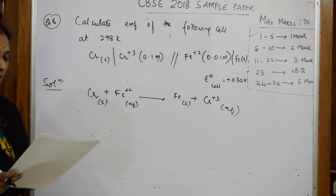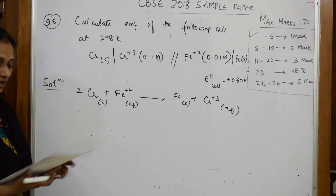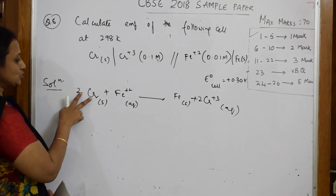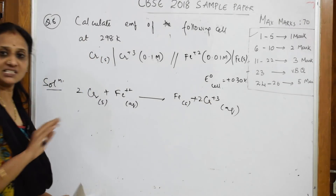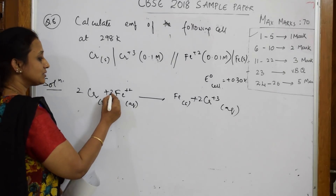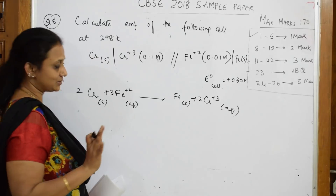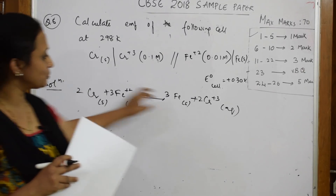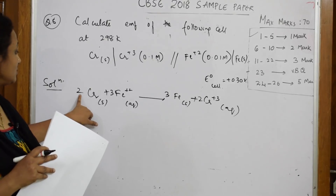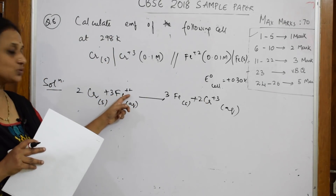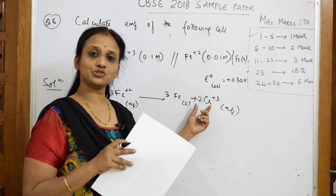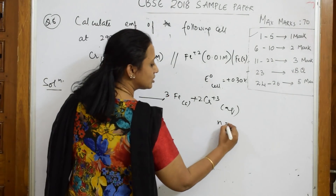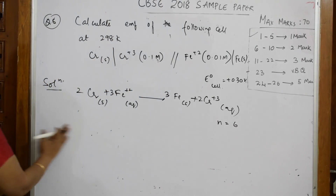To balance, both electrons must cancel. Take the first reaction with coefficient 2 — so I write 2 Cr, giving 6 electrons (3×2). For iron, to get 6 electrons I need coefficient 3. So 3 Fe²⁺ → 3 Fe, also 6 electrons. Electrons cancel — reaction is balanced. Therefore n = 6 electrons transferred.